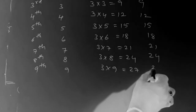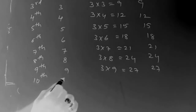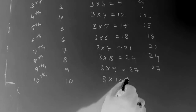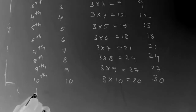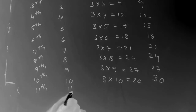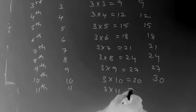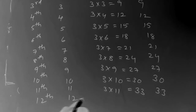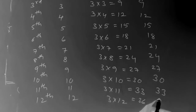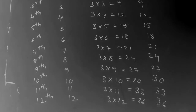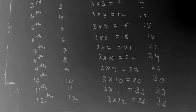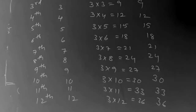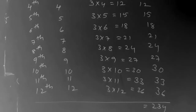Ninth class: nine plants, three nines are twenty-seven. Tenth class: ten plants, three into ten is thirty. Eleventh class: eleven plants, three into eleven is thirty-three. Twelfth class: twelve plants, three into twelve is thirty-six. Adding all of these together gives the total plants — two hundred and thirty-four.